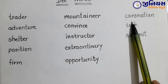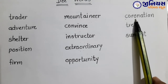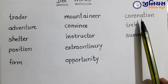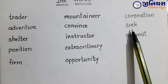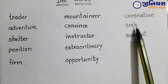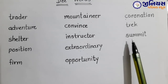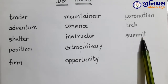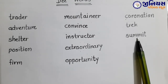Next one: coronation. C-O-R-O-N-A-T-I-O-N. Coronation. Coronation means ratilak. Next one: trek. T-R-E-K. Trek. Trek means yatra. Next one: summit. S-U-M-M-I-T means sikhar sammelan.